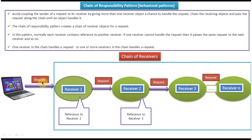In scenario one: a request comes to receiver one. If receiver one cannot handle the request, it sends the request to receiver two. Receiver two checks whether it can handle the request; if it can, it handles it, and once handled, it stops — it won't send the request to receiver three. That is the first scenario: only one receiver in the chain handles the request.